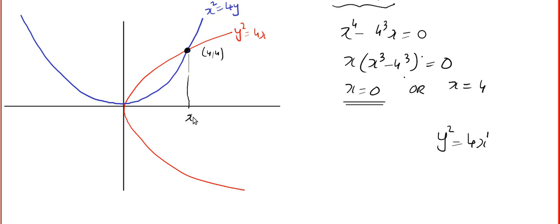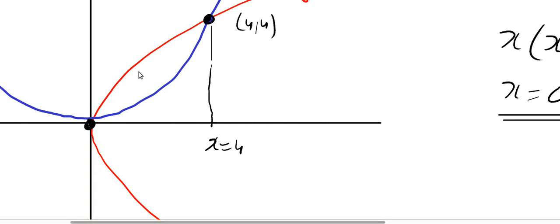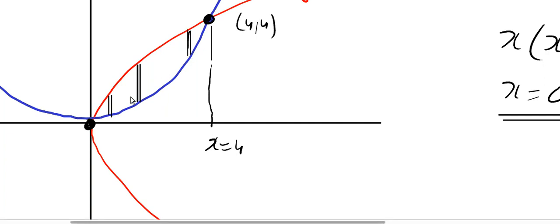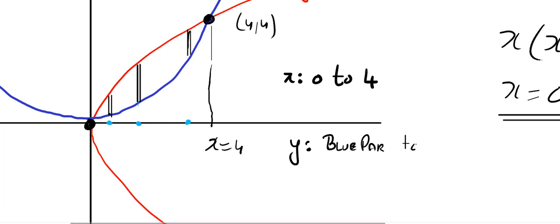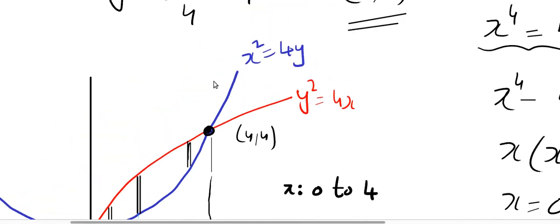I can mark x = 4 and the origin on the sketch. You can find the region of integration. You can draw the strip anywhere — wherever you draw, check the projection on the x-axis. It is obvious that our strip moves from x = 0 to 4. And y varies from the blue parabola to the red parabola; the blue parabola gives y = x²/4.